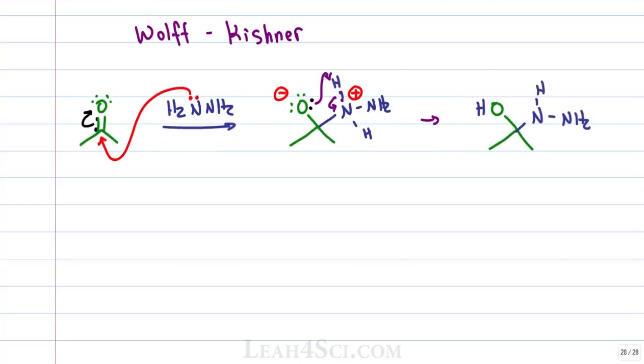This gives us a neutral intermediate because oxygen now has two lone pairs and no charge and nitrogen has one lone pair and no charge.